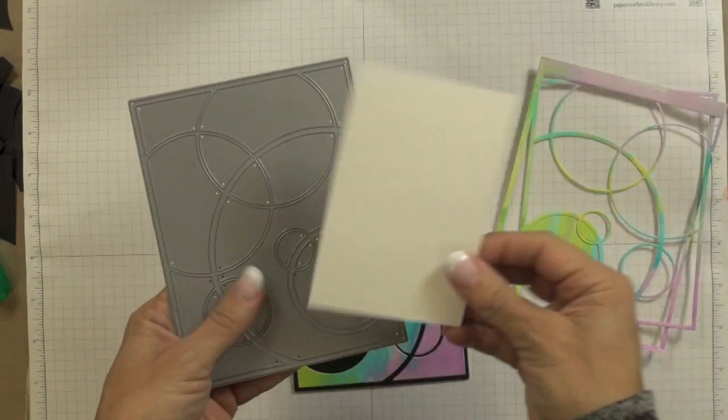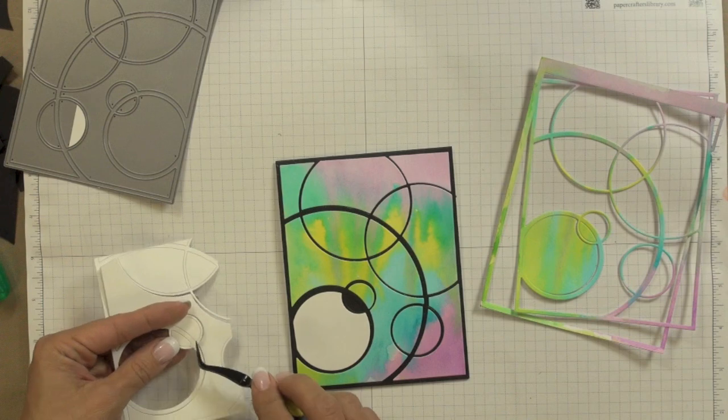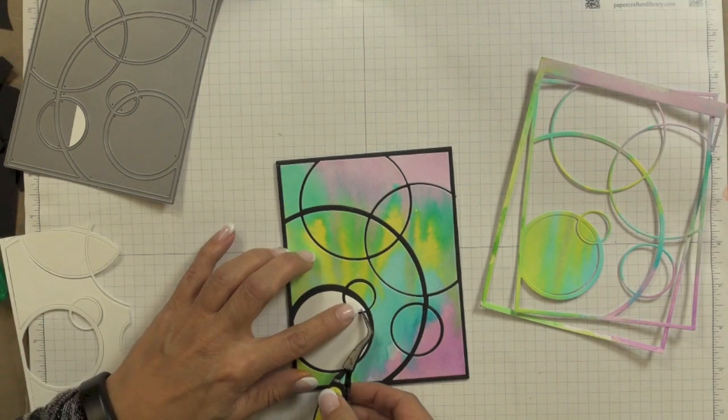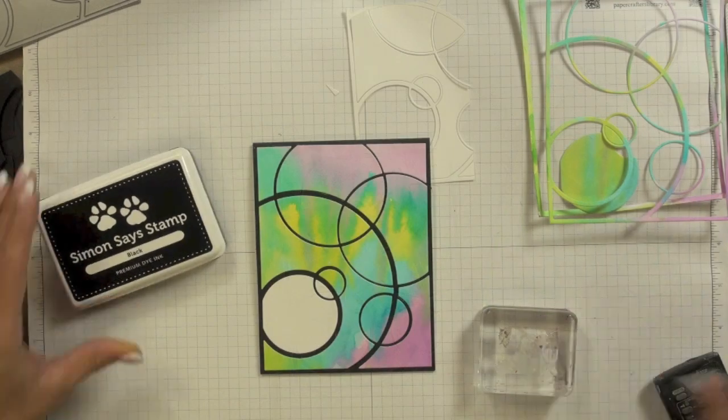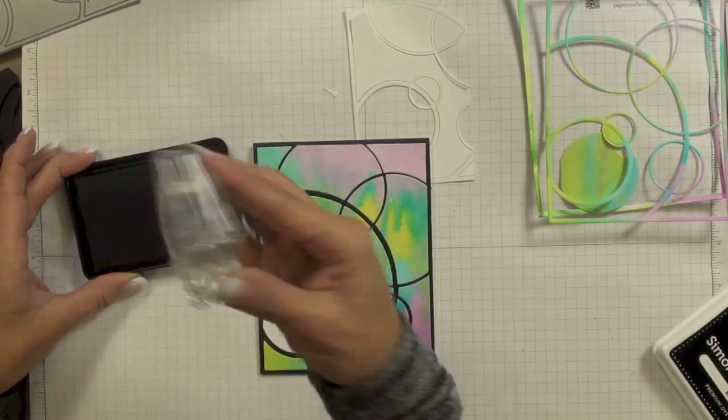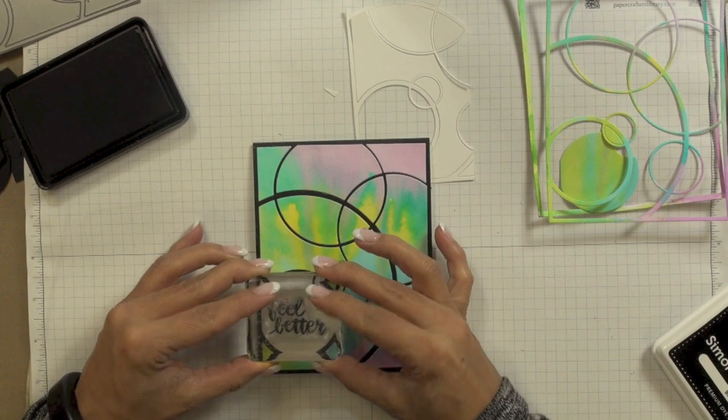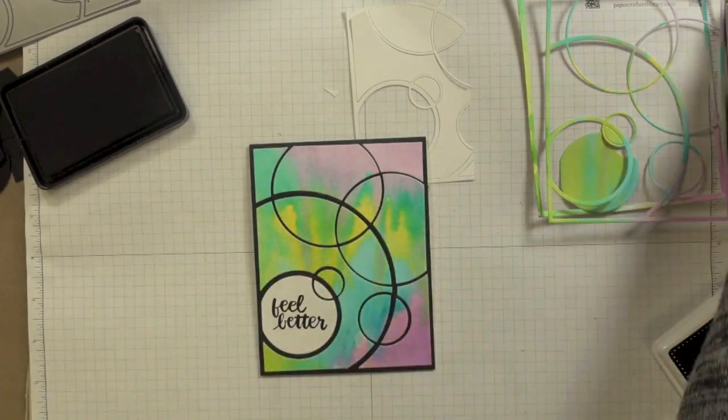Now I die cut a scrap piece of my Simon Says Stamp 120 pound cardstock with just that circular area of the mod circle die and that's what I decided to use for my sentiment. Now the sentiment I'm using comes from the Simon Says Stamp hand lettered encouragement stamp set and I stamped it onto that white cardstock circle using my Simon Says Stamp black ink.